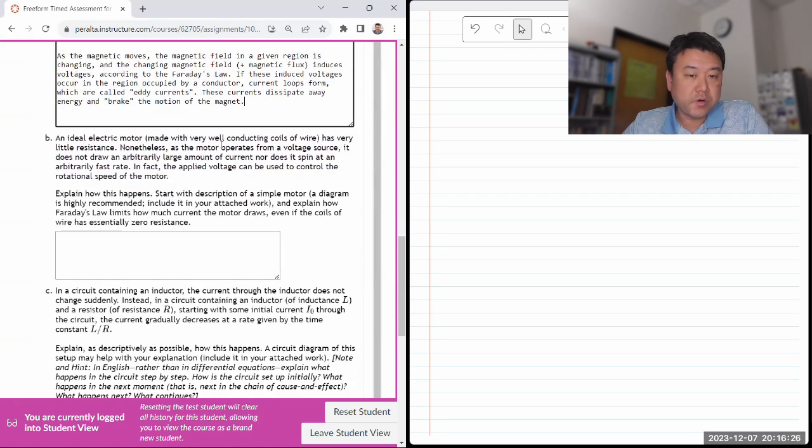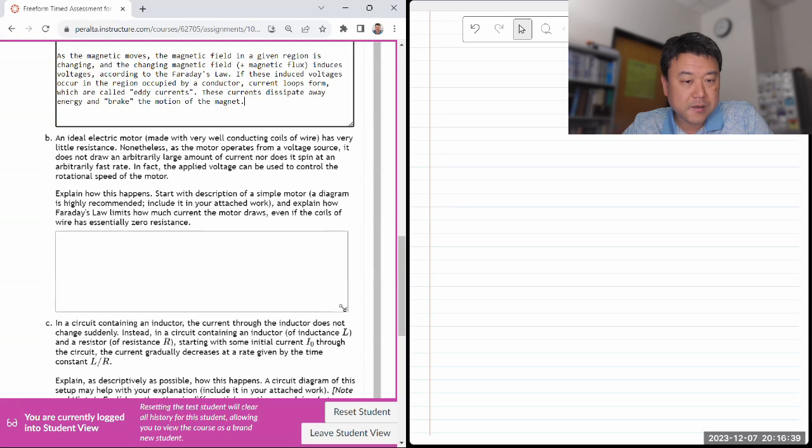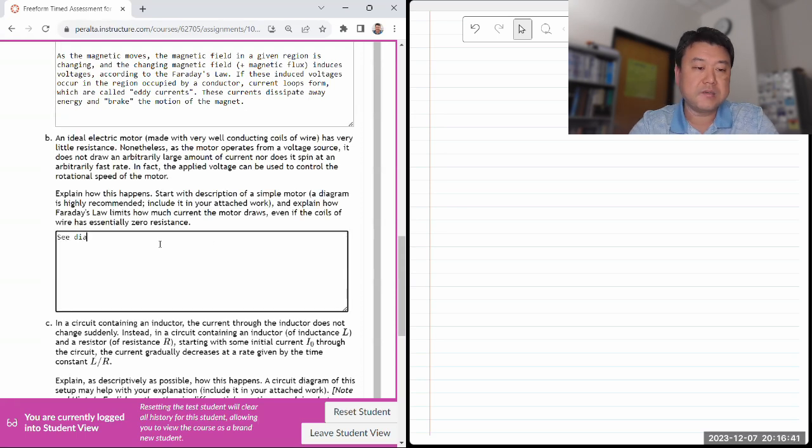You can also go into how the magnetic field produced by the induced current is in a direction that would oppose the motion of the magnet. But what I've written here is sufficiently detailed. An ideal electric motor has very little resistance in the voltage source. Does not draw up to a large amount of current. Explain how it happens. Start with the discussion of simple motor. Diagram is okay. See diagram and attach the work.